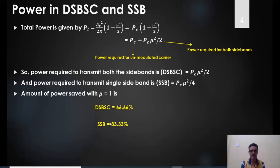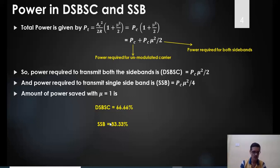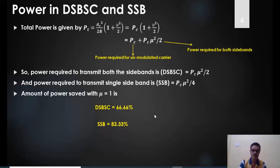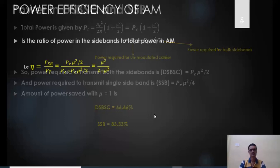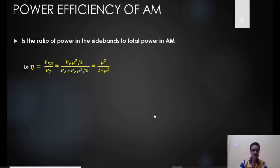The drawback of SSB is complexity — eliminating components adds complexity to the transmitter design. For applications like military communications, SSB is preferred due to power savings. In normal radio broadcasting, double sideband full carrier is used. Now let's move to power efficiency in amplitude modulation.